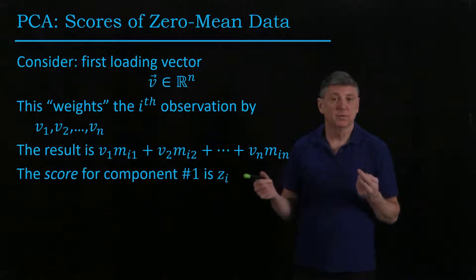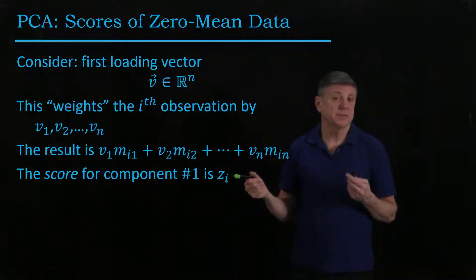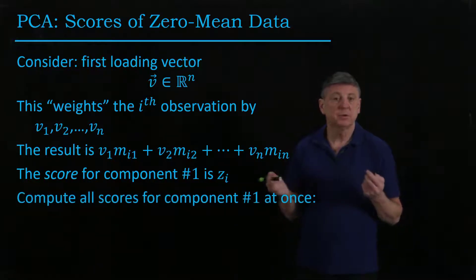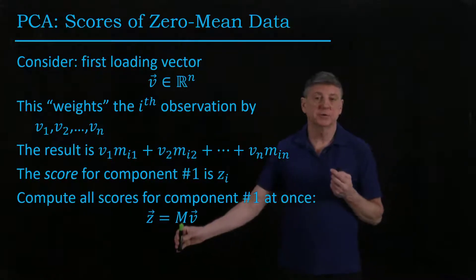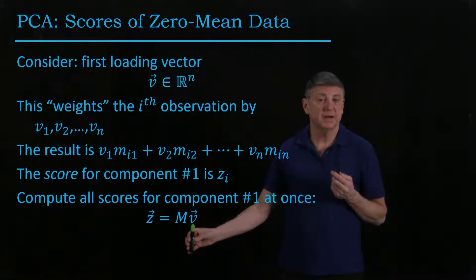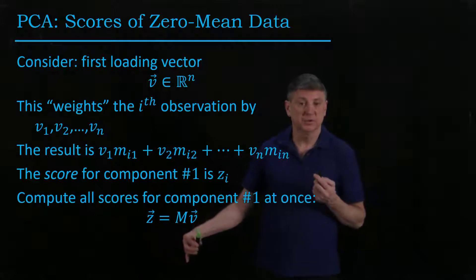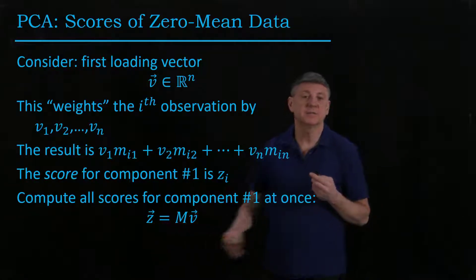We'll call the score for the ith observation as z sub i. We can compute all of these for component one at once by taking our zero mean matrix, multiplying it by the eigenvector, which is the principal loading vector, and that gives us the first score.